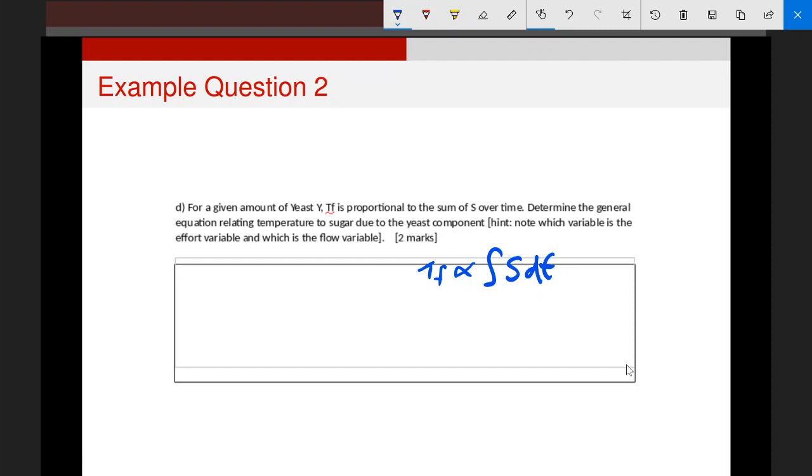This is a general relationship. To turn it into a general equation, we would have Tf equals k integral S dt. What did I do? I put this k value in here. k is the constant of proportionality.